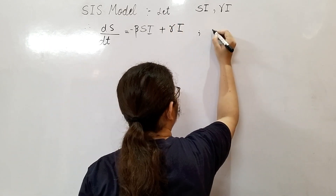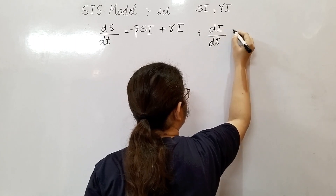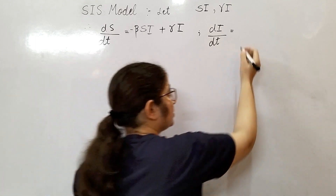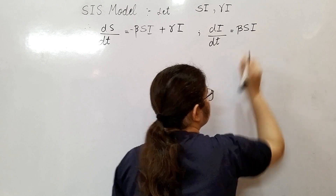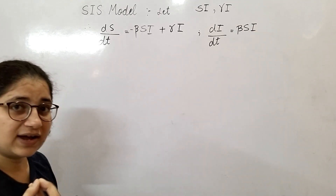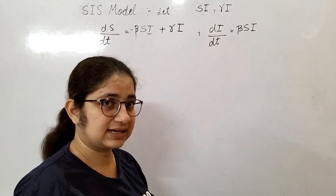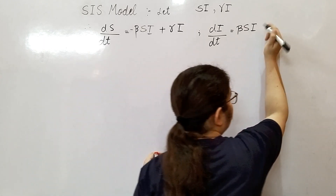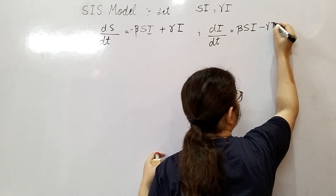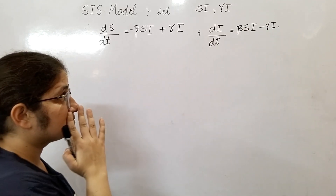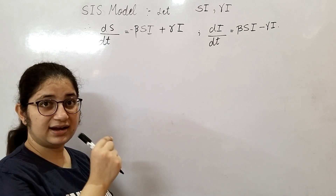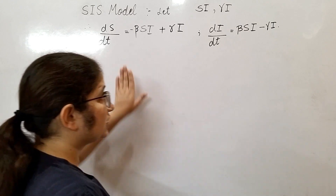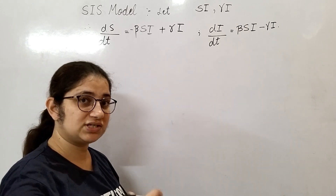Similarly for dI/dt: because susceptibles are becoming infected at a rate proportional to beta*S*I, that term is positive. When infected persons become susceptible, the number of infected persons is decreasing, so we have negative gamma*I. You must think clearly about why we have positive and negative signs — once that is clear, we just integrate.